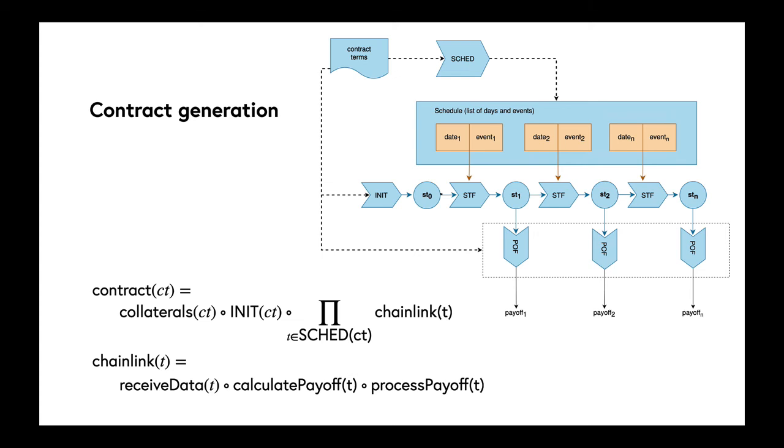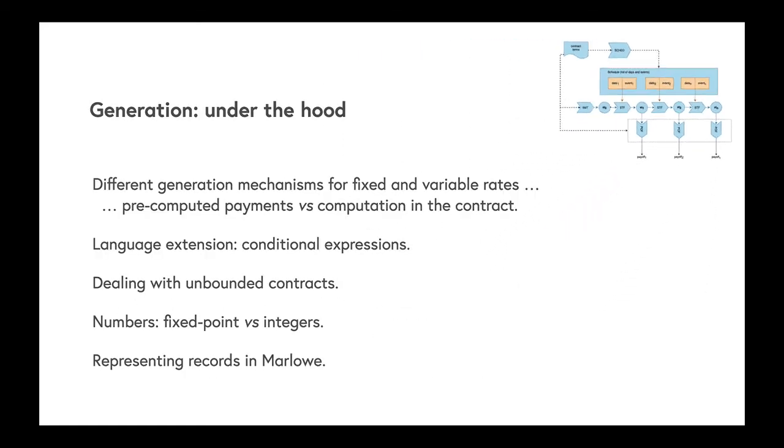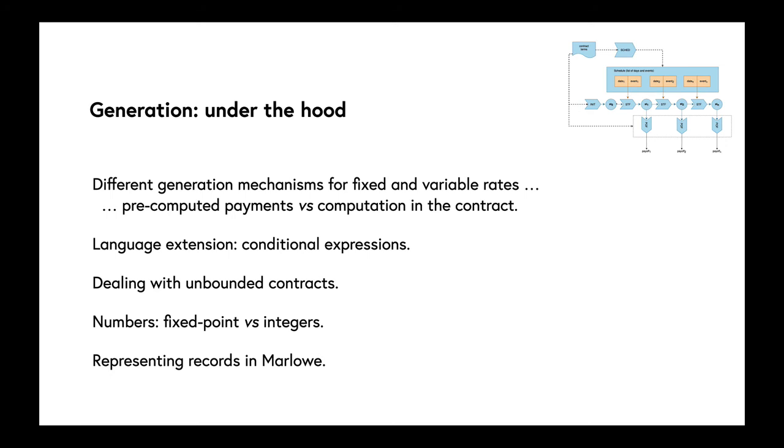The Marlowe contract consists of generating all the payments. The iteration is done and generates the Marlowe. Then we have simply a flat schedule of inputs and payments. Under the hood, we need different generation mechanisms, fixed and variable rates. If we have fixed rates, then we can pre-compute payments in advance. If we have variable rates, the contract will contain terms to calculate the actual payments that have to be made at particular points.